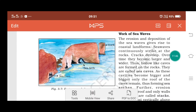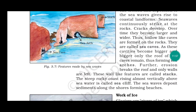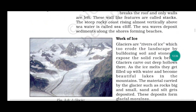In a stack, the upper wall has been destroyed over time. These wall-like features are called stacks. The steep rocky coast rising almost vertically above sea water is called a sea cliff. Sea waves also deposit sediments along the shores, forming beaches.